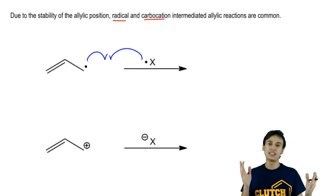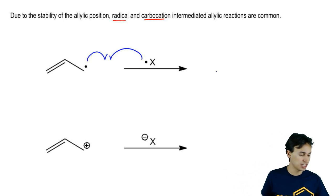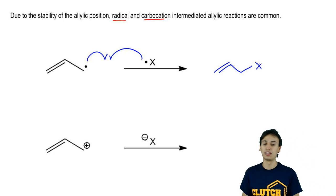A termination step that would then take these two radicals, form a new sigma bond, and we would get a product that looks something like this.